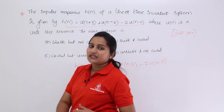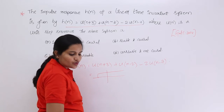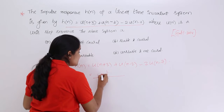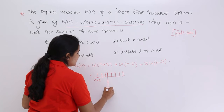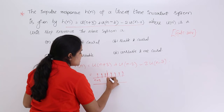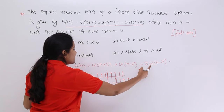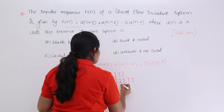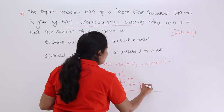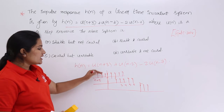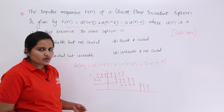In discrete samples, from n = -3 we have samples from u(n+3), and from n = 0, 1, 2 onwards we have samples from u(n-2). For 2u(n-7), setting n-7 = 0 gives n = 7, so from n = 7 onwards we have samples with amplitude 2. Adding u(n+3) and u(n-2) and subtracting 2u(n-7) yields a finite signal — no infinite values.